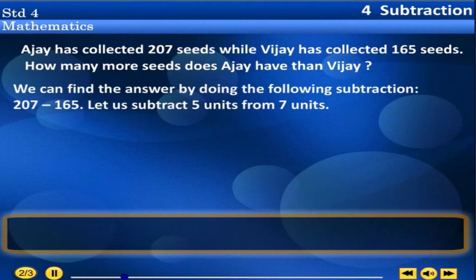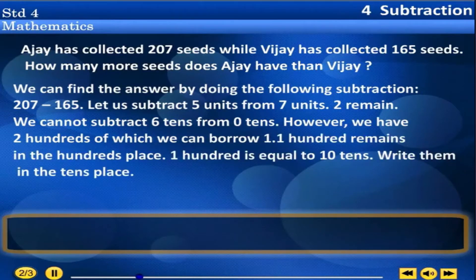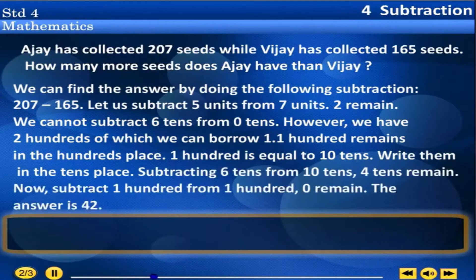We can find the answer by doing the following subtraction: 207 minus 165. Let us subtract 5 units from 7 units — 2 remains. We cannot subtract 6 tens from 0 tens. However, we have 200, of which we can borrow 1. 100 remains in the hundreds place. 100 is equal to 10 tens; write them in the tens place. Subtracting 6 tens from 10 tens — 4 tens remain. Now subtract 100 from 100 — 0 remains. The answer is 42.